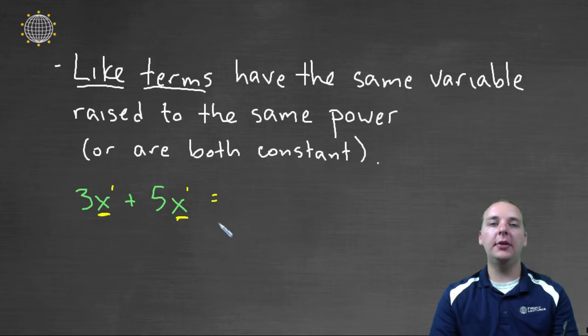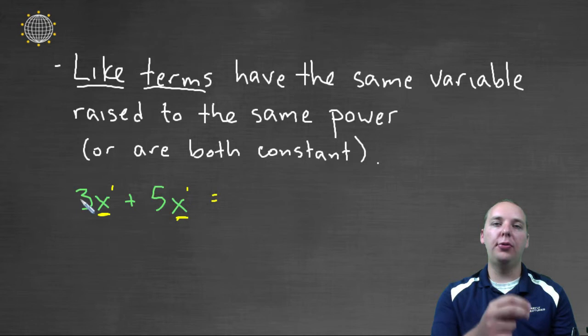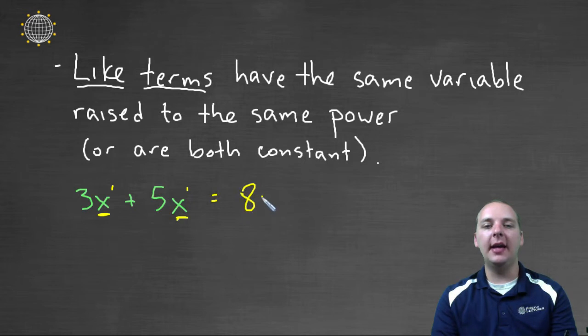Now if you have like terms, you can simply combine them together, add their coefficients, and then just keep whatever variable you have here. I'll give you an analogy. If you had three apples plus five apples, you would have a total of eight apples.